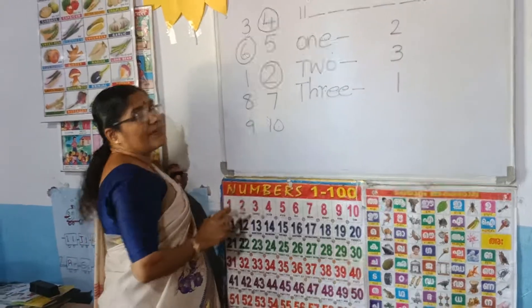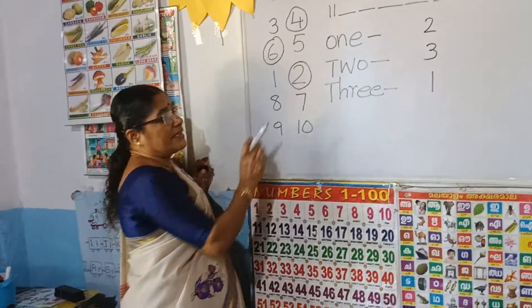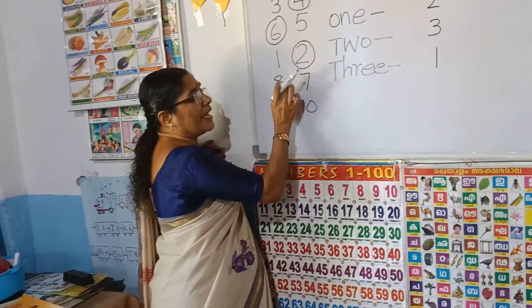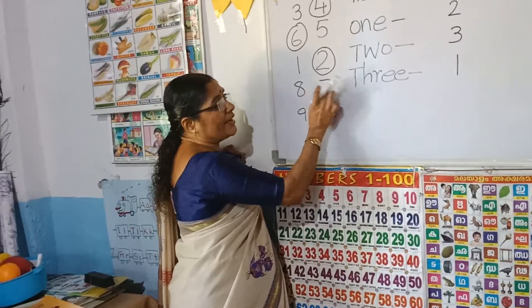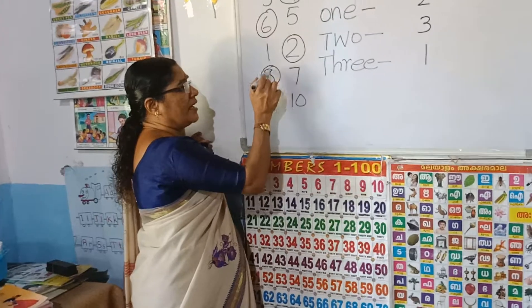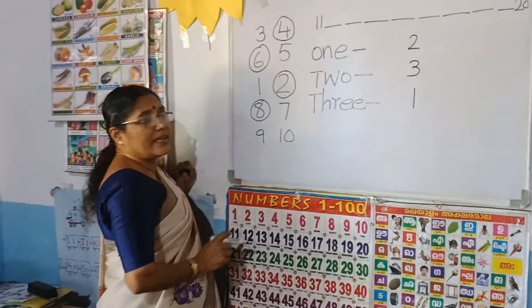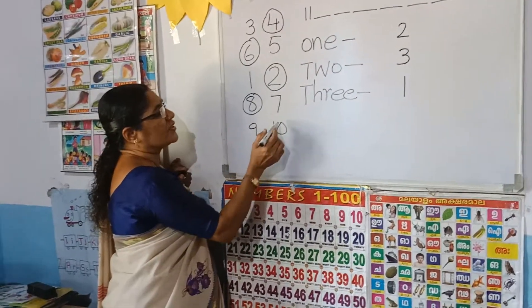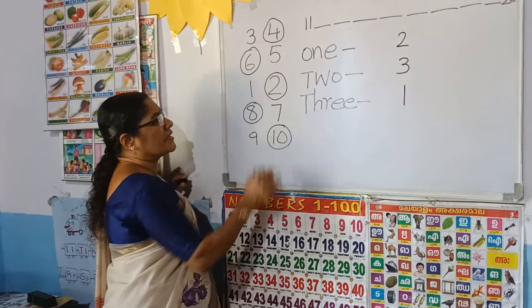8 and 7 — which is the biggest number? After 7 comes 8, so 8 is the biggest number. 9 and 10: 10 is coming after 9, so 10 is the biggest number.